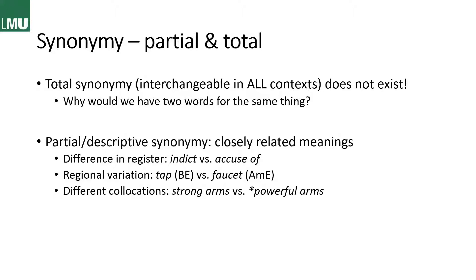In a casual conversation we might accuse somebody of doing something, but we wouldn't say somebody is indicted — that is a much more formal and mostly judicial term. Or we have regional variation: the thing the water comes out of is called 'tap' in British English and 'faucet' in American English. Of course this is not absolute, but it's a tendency. And then we have different collocations — for example, we can say somebody has strong arms, but we wouldn't say somebody has powerful arms.